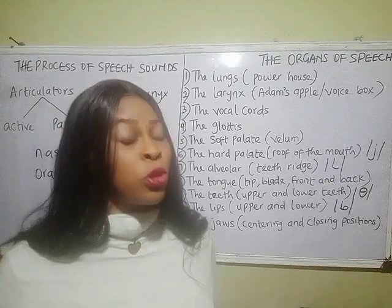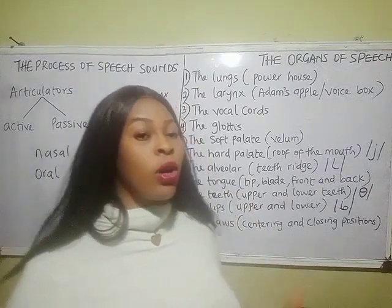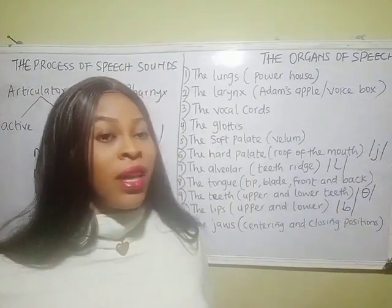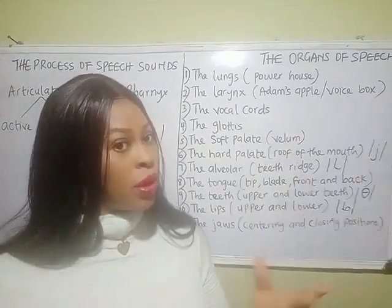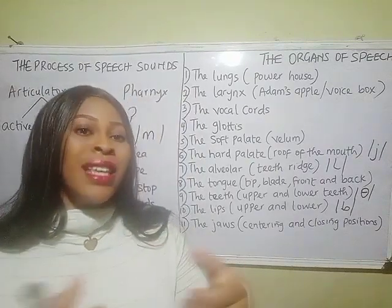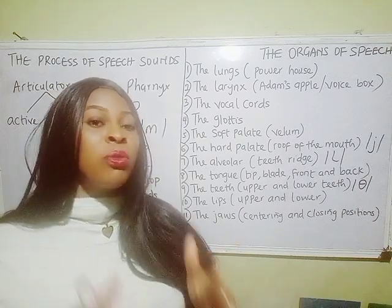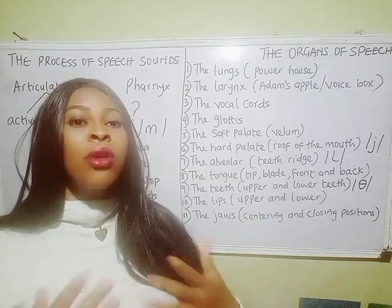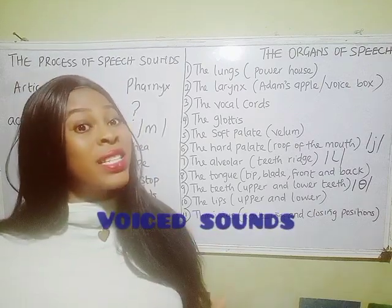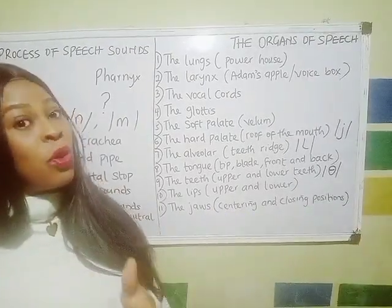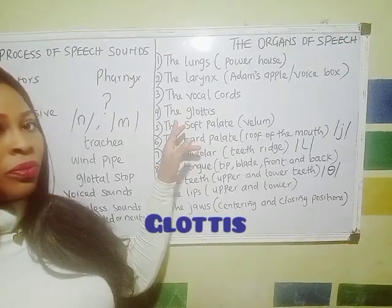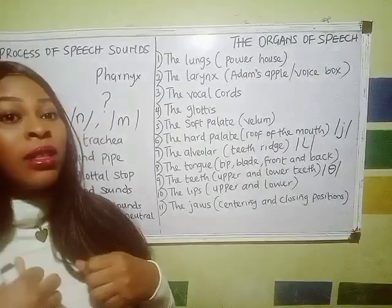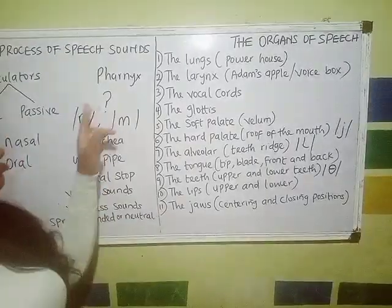The Adam's apple is protruded in some people and not in others. The next one is the vocal cords — two lip-like membranes attached to the larynx with muscles. They either contract or expand. When they expand, there is no vibration, and we have voiceless sounds. When they contract, there is vibration and they produce voiced sounds. The space in between the vocal cords is called the glottis. When there is pressure of air in the glottis and then an outburst of release, it is called a glottal stop.